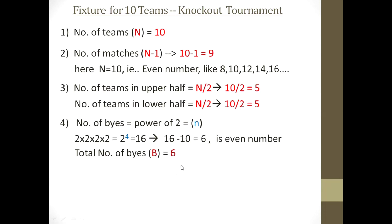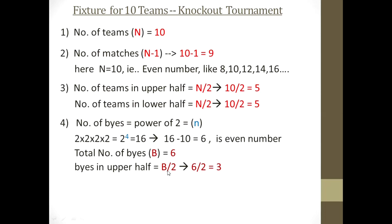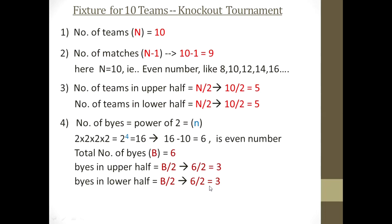With 6 total byes, we divide them into two halves. Byes in the upper half = b/2 = 6/2 = 3, and same for the lower half — 3 byes each. If the number of byes were an odd number like 7, 9, or 11, there would be a different formula, which will be shown in the next video on odd number of teams. The last point is the number of rounds: since the power of 2 used was 4 (2^4=16), there are 4 rounds to be played.